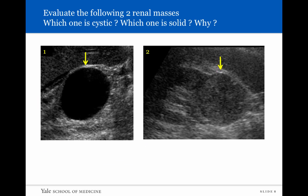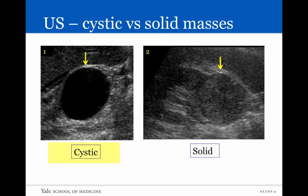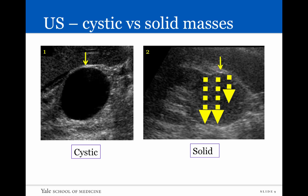Using those concepts to evaluate a case with two renal masses: one is cystic and one is solid. The cystic structure shows no signal inside — sound waves go through it with nothing reflected back from the structure itself, only from its peripheral borders. The solid mass, by contrast, shows a very complex-appearing internal signal because many sound waves are reflected backwards as they pass through it, resulting in a complex solid-appearing mass in the kidney.